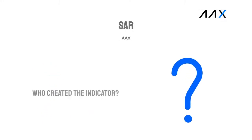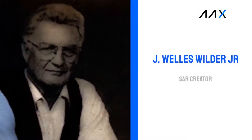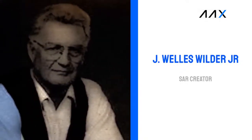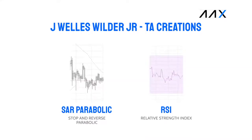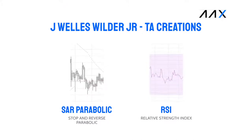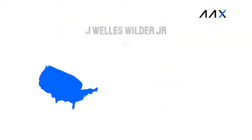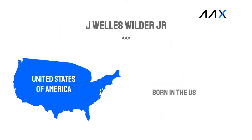The SAR parabolic was created by J. Wells Wilder Jr. Alongside the SAR parabolic, J. Wells Wilder Jr. also created the RSI, the Relative Strength Index, another popular indicator. Wells Wilder was a financial analyst and was born in Norris, Tennessee, the United States.